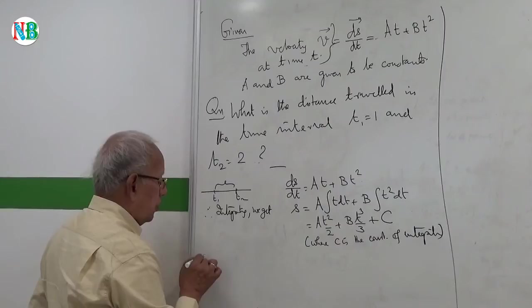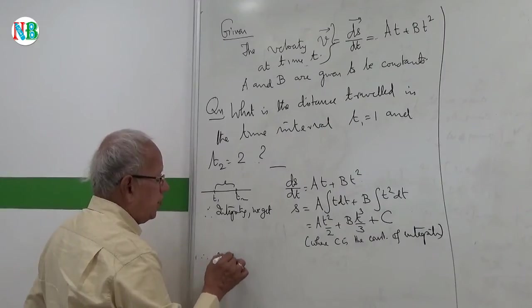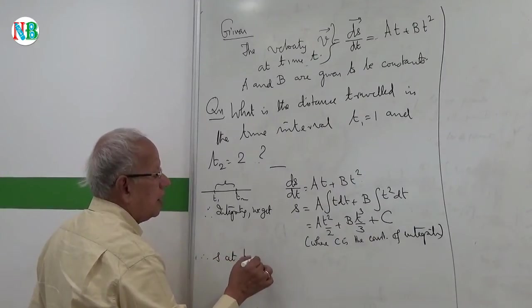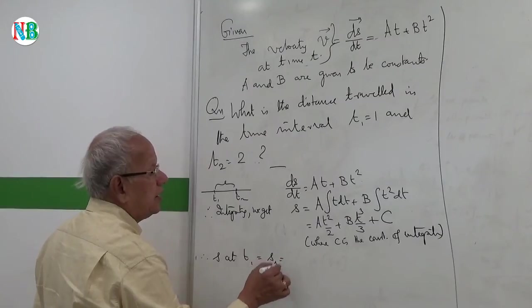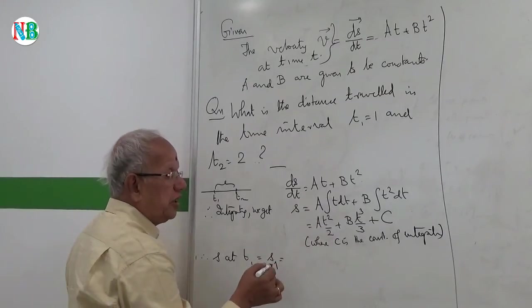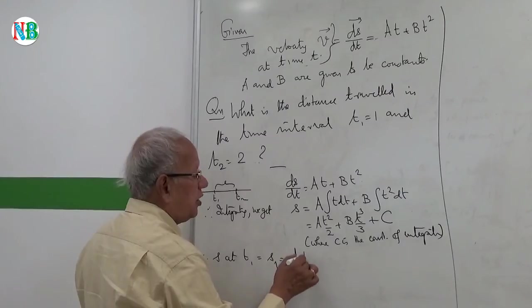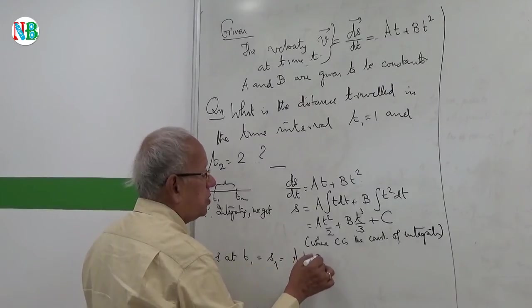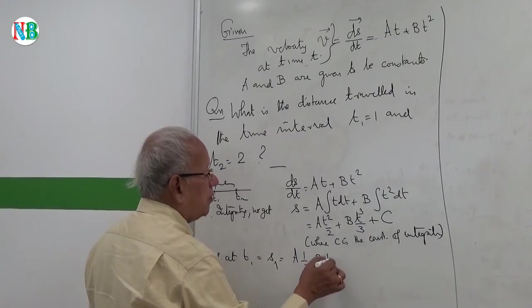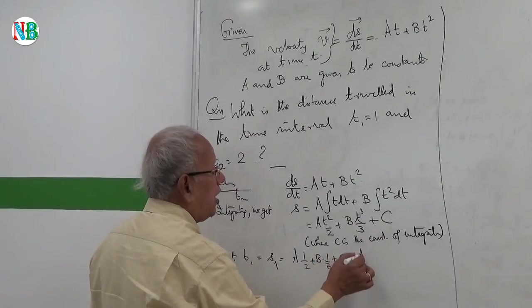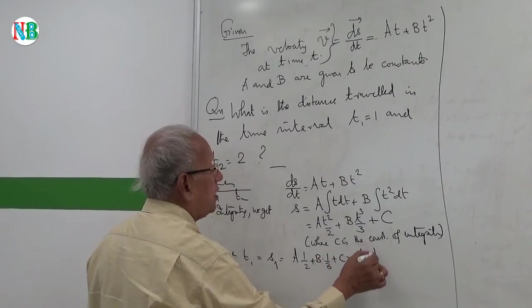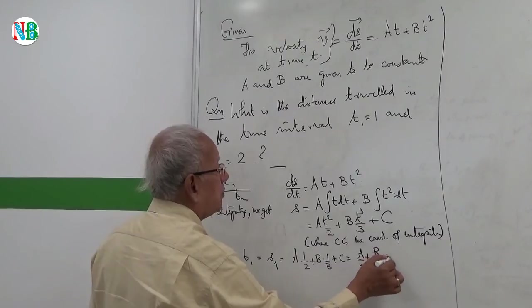Therefore, what is s at t1? Let me call it as s1. And that is I have to substitute t equal to 1 here. So a into 1 over 2 plus b into 1 over 3 plus c. So it is a over 2 plus b over 3 plus c.